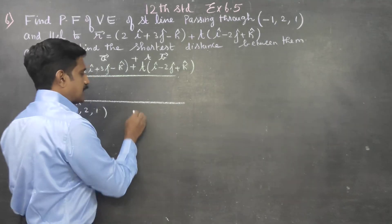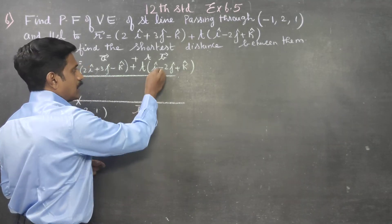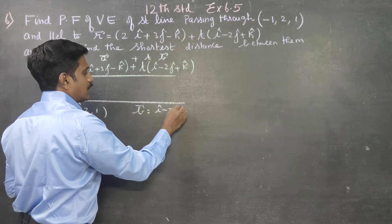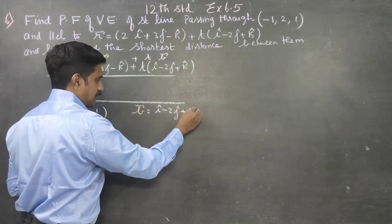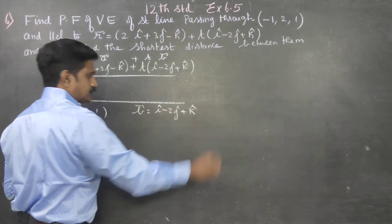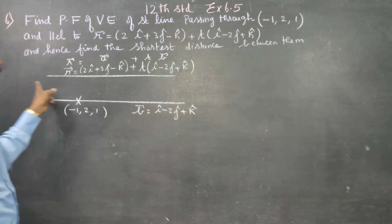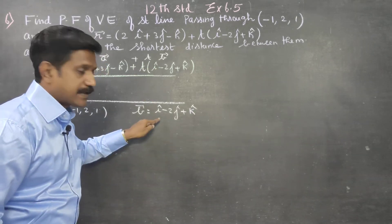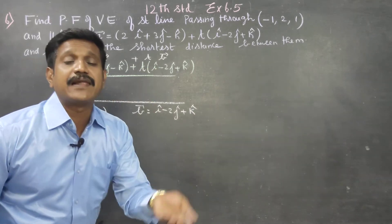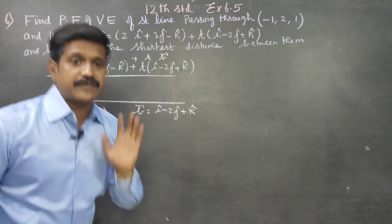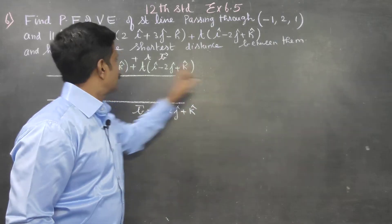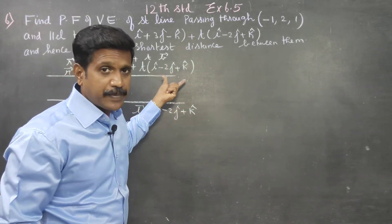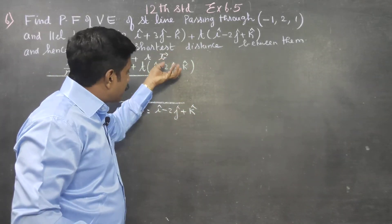The direction vector is equal to i minus 2j plus k. The parallel straight line direction is given. The point is given. The line is given.